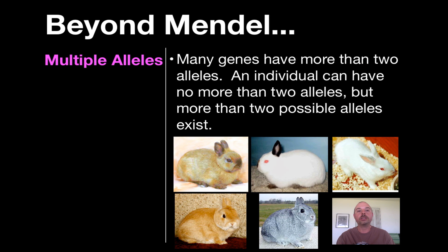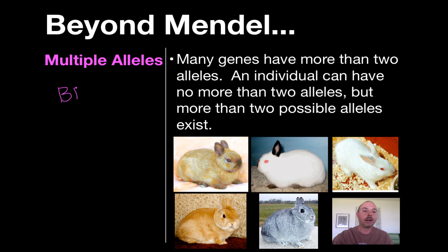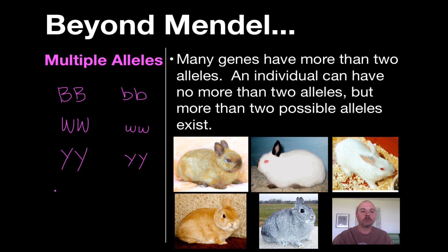The second concept is multiple alleles. While an individual can have no more than two alleles, there are genes that have more than two alleles. For instance, looking at rabbits, the allele for fur color could be brown (abbreviated B), white (W), slightly yellowish (Y), tan (T), or gray (G). Instead of strictly having just two alleles, we might get a mixture of several different alleles.